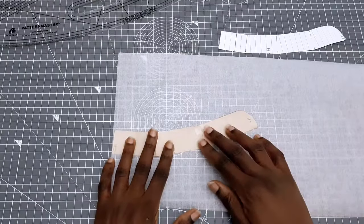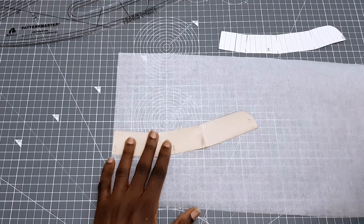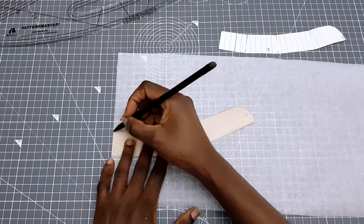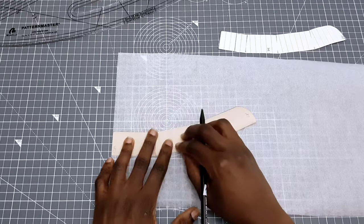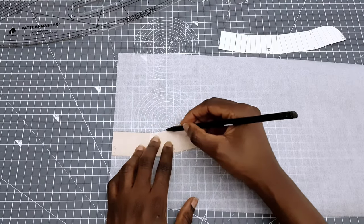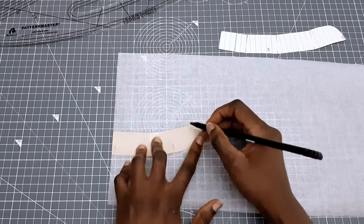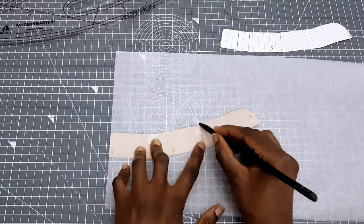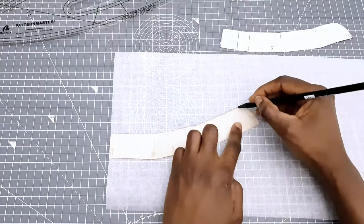So the next step is to draw in our seam allowance. To do this I'm going to place the collar on fresh pattern paper and then I'm going to outline it. You can secure yours with some sellotape to stop it from moving around. Once you outline it then you're going to draw in your one centimetre seam allowance all through.